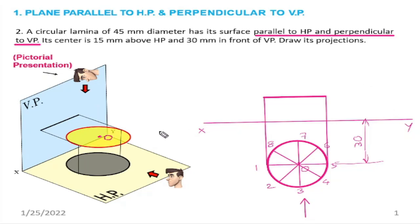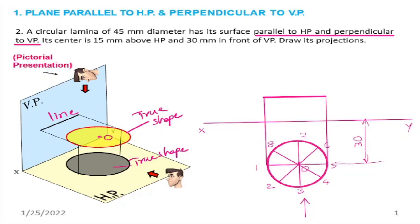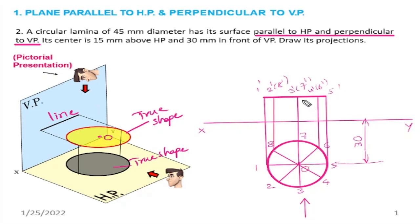This line is nothing but the plane appearing as a line in the front view. You can observe in the 3D representation — the yellow color shows the true shape. The plane parallel to HP appears as a line in the front view. The points are: 1-dash, 2 and 8, 3 and 7, 4 and 6, 5. In the top view, O is the center, which is 15 mm above HP and 30 mm in front of VP.